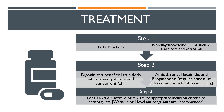For CHA2DS2-VASc score greater than or equal to 2, it is important to utilize appropriate inclusion criteria to anticoagulate. Warfarin and novel anticoagulants are recommended. Selection of anticoagulant is guided by the classification of AFib. Baseline renal function should be obtained. Novel anticoagulants such as dabigatran and apixaban are recommended for non-valvular AFib and increased susceptibility to intracranial bleed.